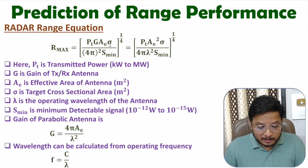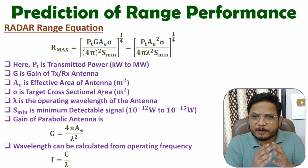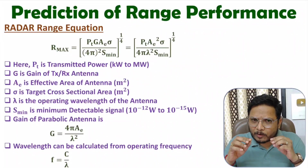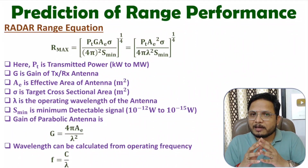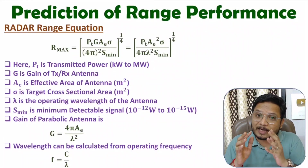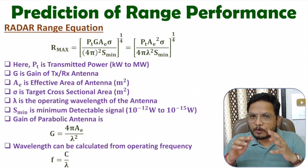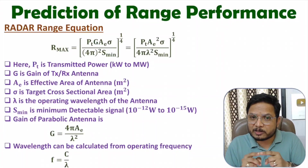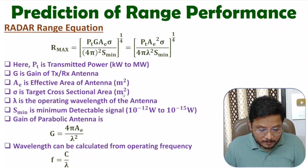Sigma is the target cross-sectional area. I have already made a separate video on how to identify the target cross section. There is a process of identification of target cross-sectional area based on reflection of energy from the target. For now, consider that the target has a cross-sectional area sigma given in terms of square meters.